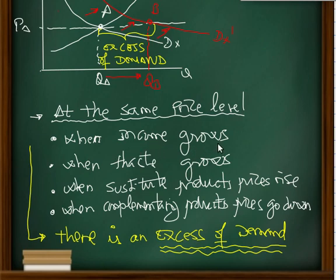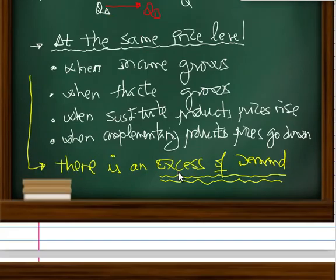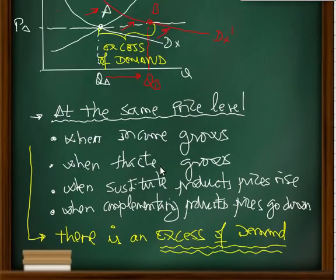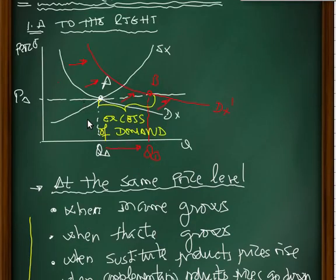When income grows, when taste grows, when substitute product price rises, or when complementary product price goes down, there is an excess of demand.